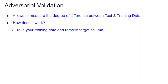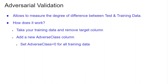So let's look at this. We'll take our training data, remove our target, and add a new class called the adverse class column. We will set adverse class equal to 0 for all training data, and set adverse class to 1 for all test data.